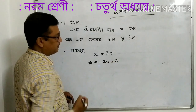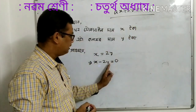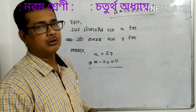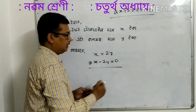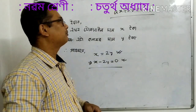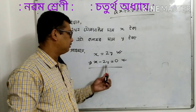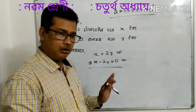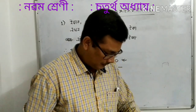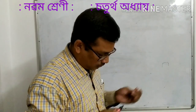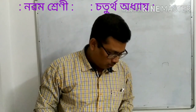Then it goes to 0. So this is 0, because c is 9. So this is 0 plus 2. So this is 0. So then it would be 0. We have ax plus by plus c is equal to 0. First of all, we have a 0 and we have a 1.